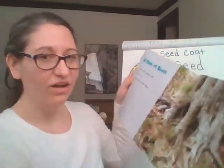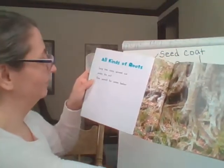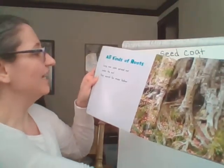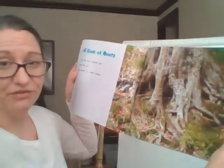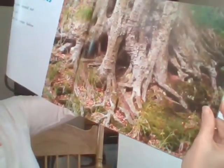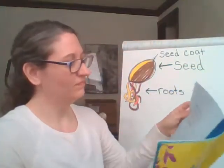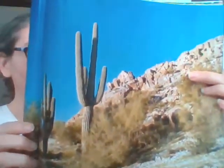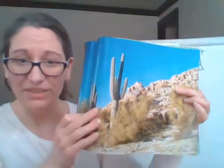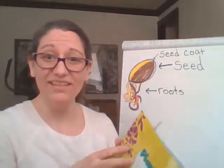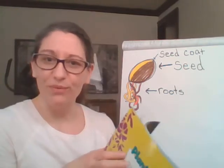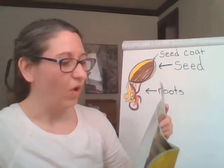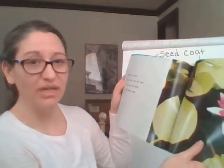'All kinds of roots. Long tree roots spread out under the soil — they search for water below.' Look at all those! 'Shallow cactus roots soak up rain quickly — they store water for the plant.' Remember, cactuses are in the desert where it's really dry, so those roots suck up all the water to save it. 'Water lily roots grow down into the mud — roots keep the plant from floating away.'